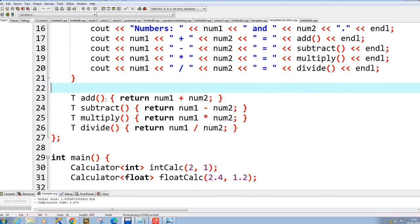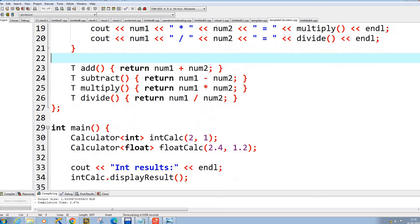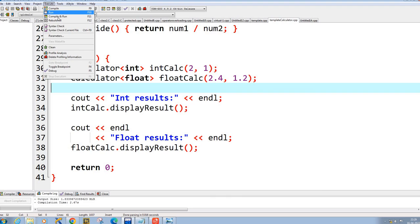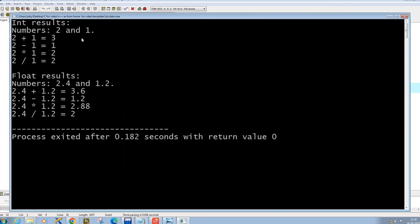So you have different functions: T add, T subtract, T multiply. Different type of variables it can take, either integer or float. So you can see the output of this program. See that this is a good example of the template.